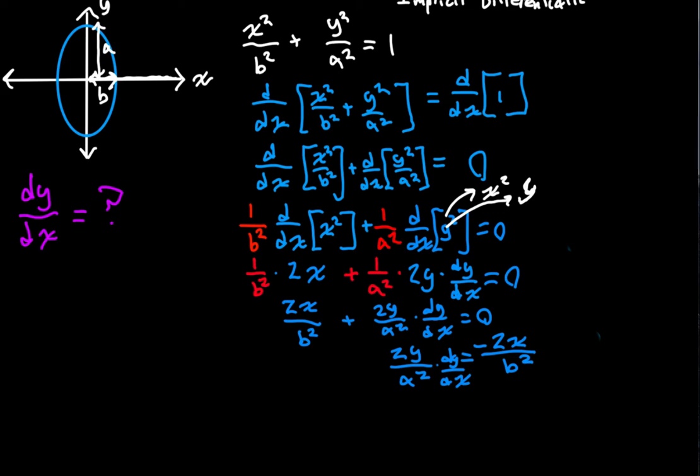What can we do now? Well, what I'm going to do is I'm just going to divide both sides by this here. So, we're going to say that DY DX is equal to negative 2X over B squared divided by 2Y over A squared.